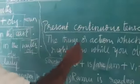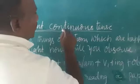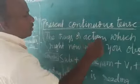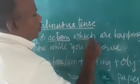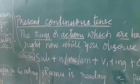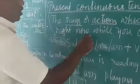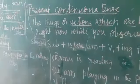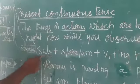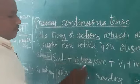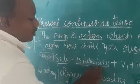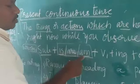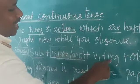Let's go with another tense — present continuous tense. Present continuous means the things or actions which are happening right now while you are observing. The structure is: subject, then if it is singular you take 'is', if it is plural you take 'are', and if you are taking 'I' you have to take 'am'. Then V1 plus -ing form, and the object.